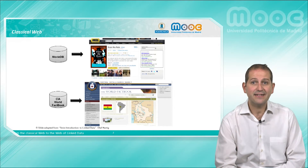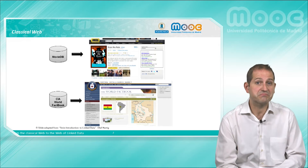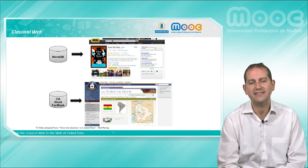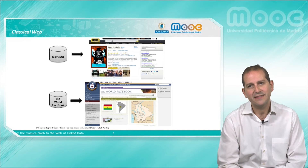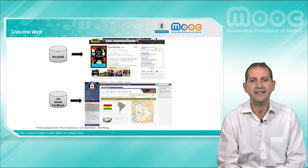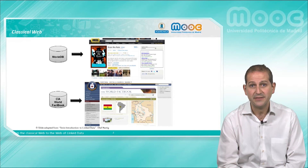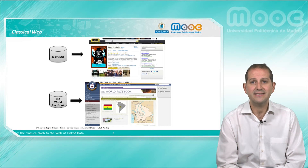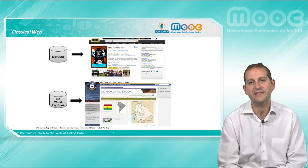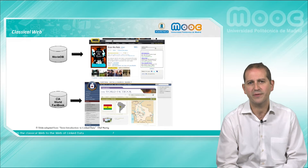The slide shows just two of the many websites that are exposing data in such a manner: the IMDB site, which provides data about films, and the CIA World Factbook, which provides general geopolitical data from all over the world.